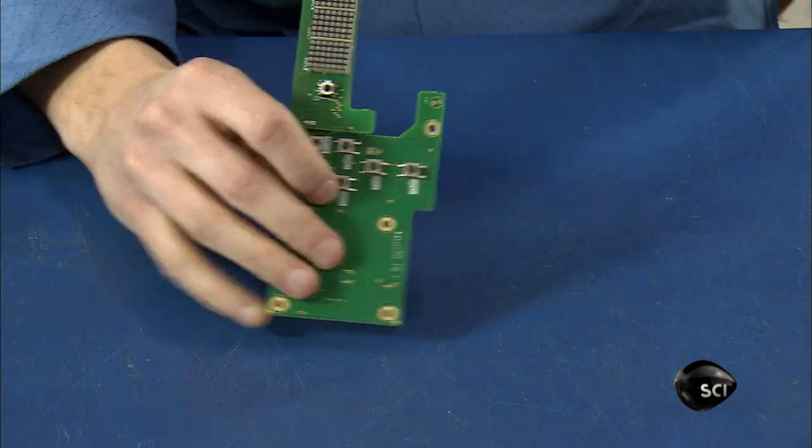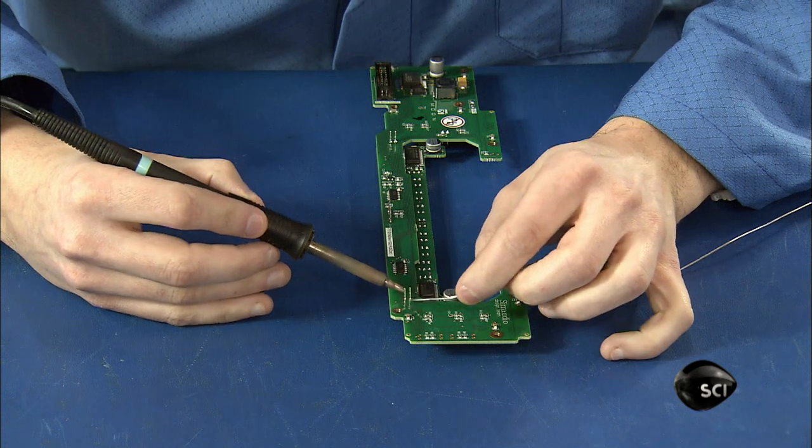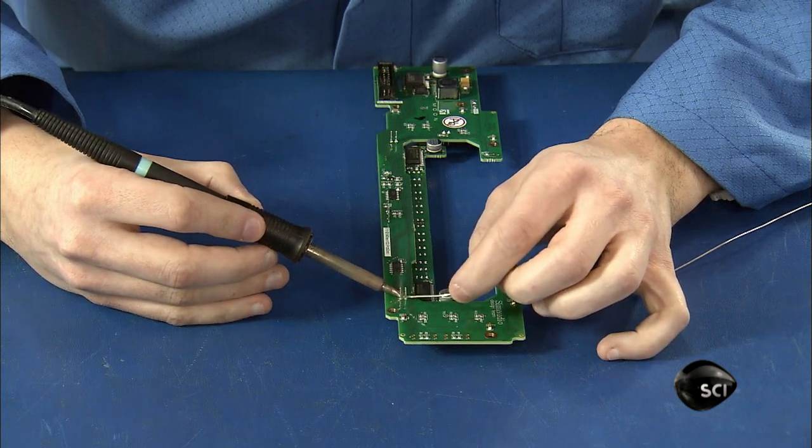Once all the circuit boards pass inspection, workers solder the LED board to the front panel circuit board, which runs the converter's user controls.